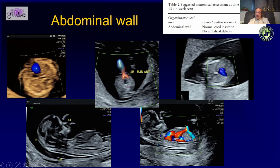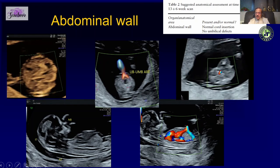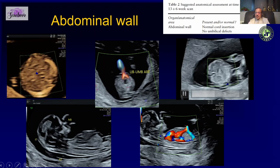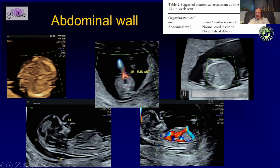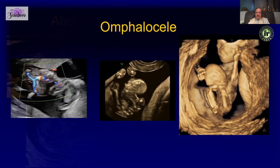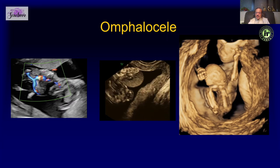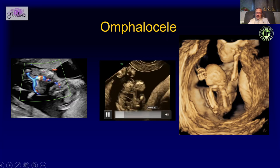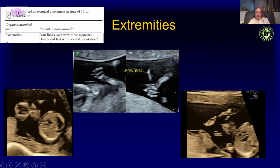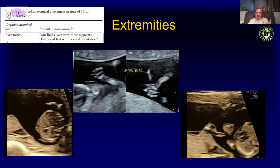The abdominal wall is very important — look at the contour of the fetus, make sure the abdominal wall is intact, and look at the cord insertion to pick up omphalocele. Make sure there are two umbilical arteries. The most common thing we see in the first trimester is omphalocele — this is the same fetus who also had a DORV.